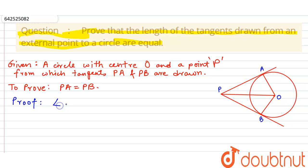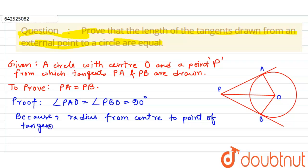So first thing is that angle PAO equals angle PBO equals 90 degrees, and why so? Because radius from center to point of tangency is perpendicular to tangent. As point of contact of tangent to the circle is A and B here as shown in the diagram, therefore these two angles are 90 degrees.